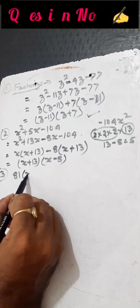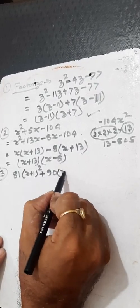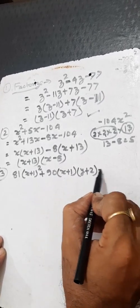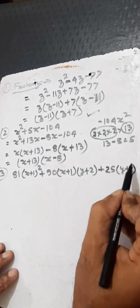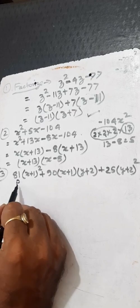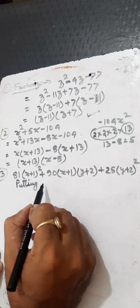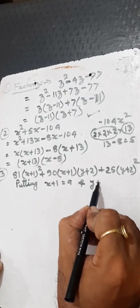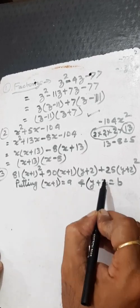Third question: 81(x plus 1) whole square plus 90(x plus 1)(y plus 2) plus 25(y plus 2) whole square. We solve this by substitution: put x plus 1 equal to A and y plus 2 equal to B.